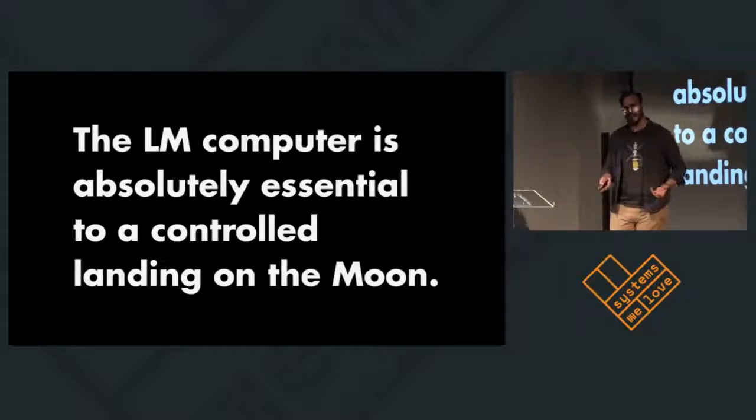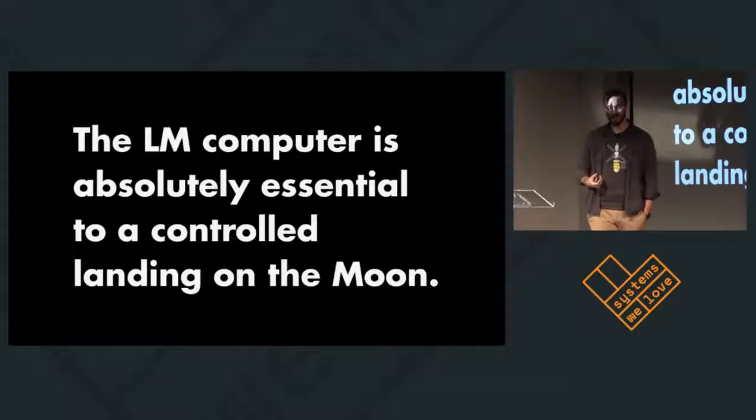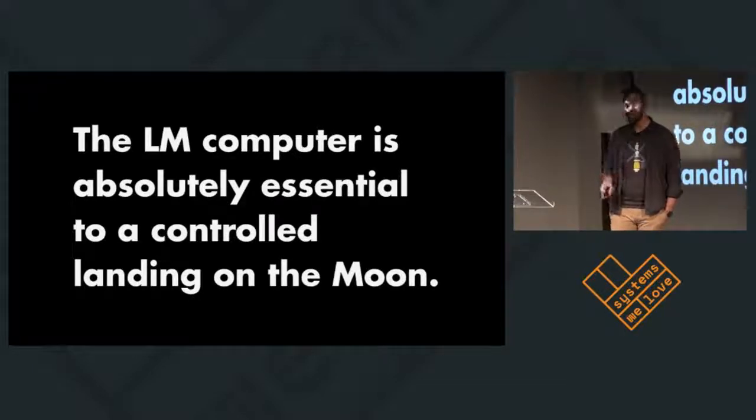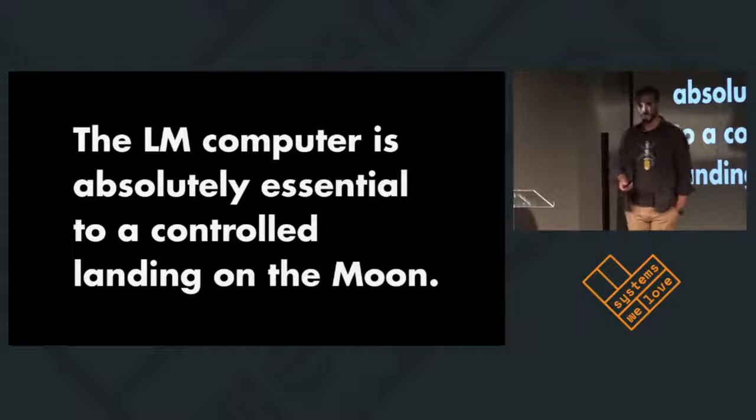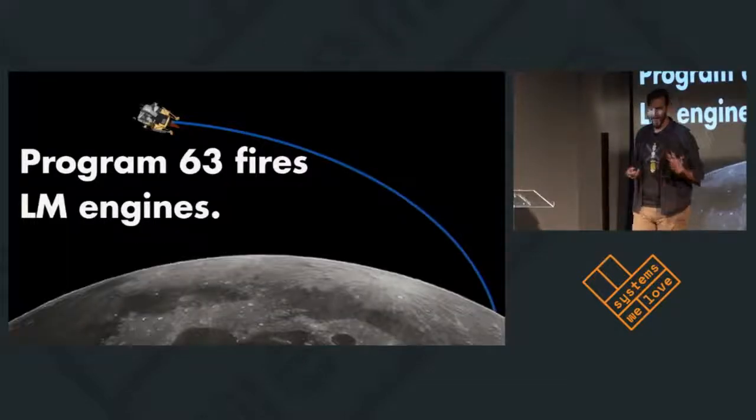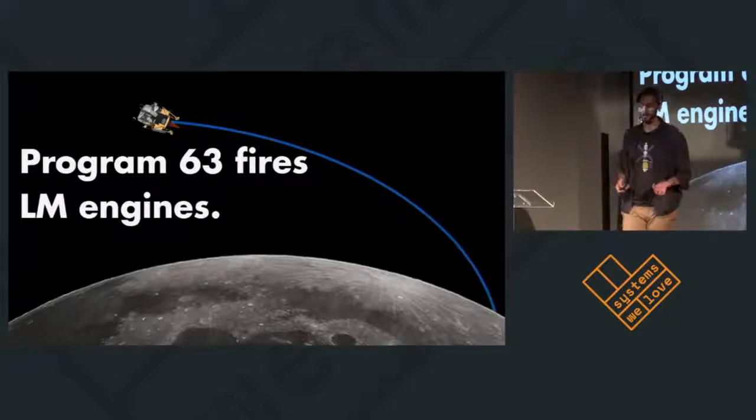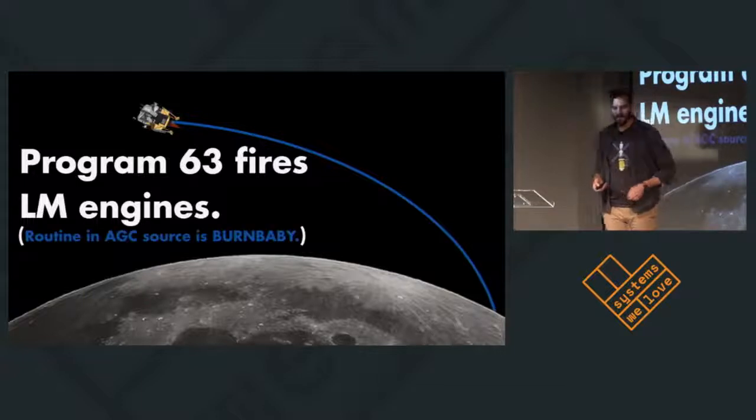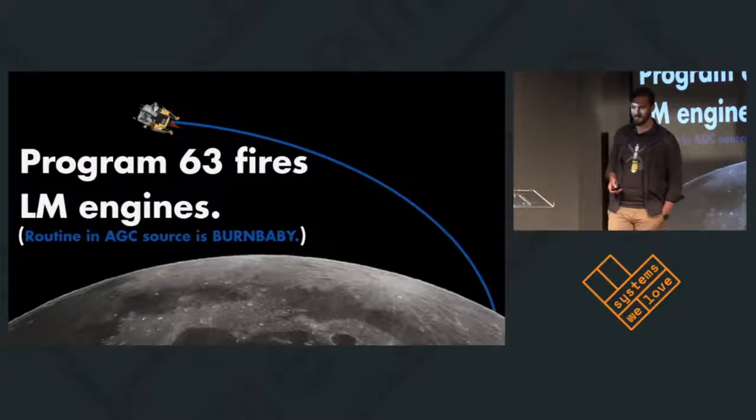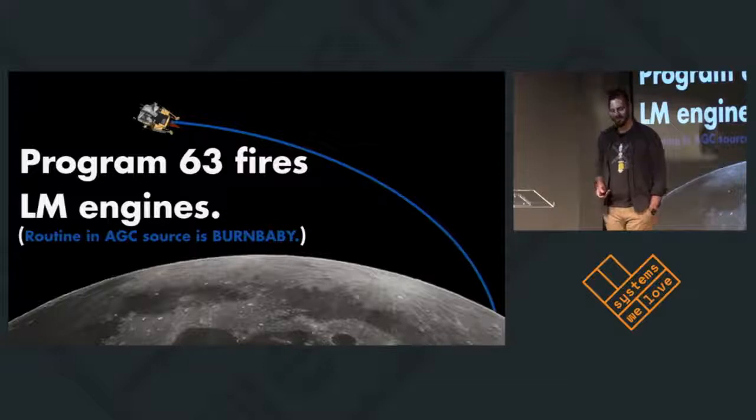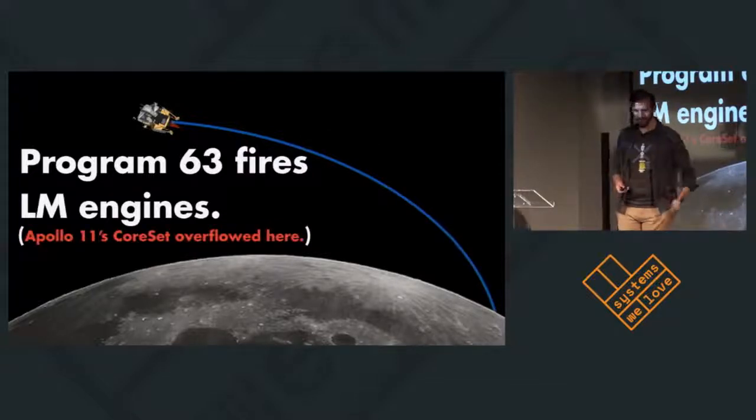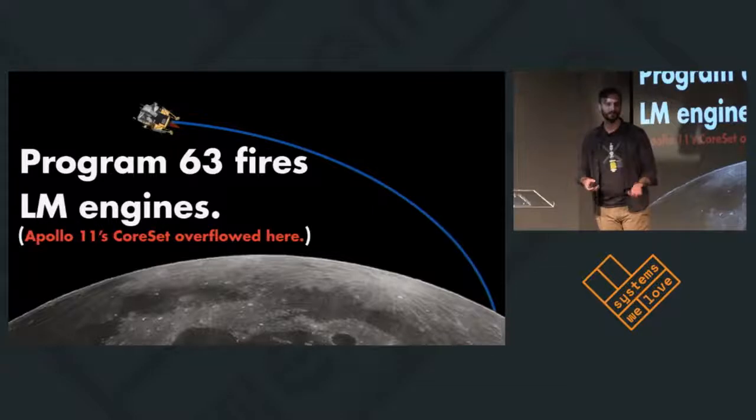So the lunar module is one of the first fly-by-wire spacecraft. There had been a rocket plane a few years earlier that had been fly-by-wire, but that was about it at this point. So the astronauts, when they decide that it's time to land on the moon, they instruct the computer to execute program 63. And that fires the lunar module engines to begin the descent. And the routine in the AGC source code for program 63 is actually called Burn Baby.